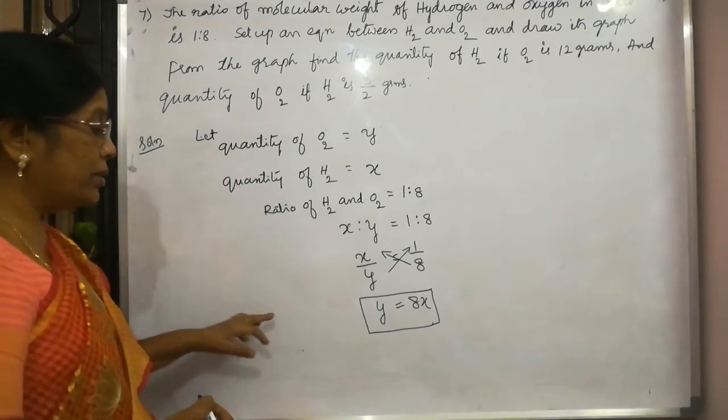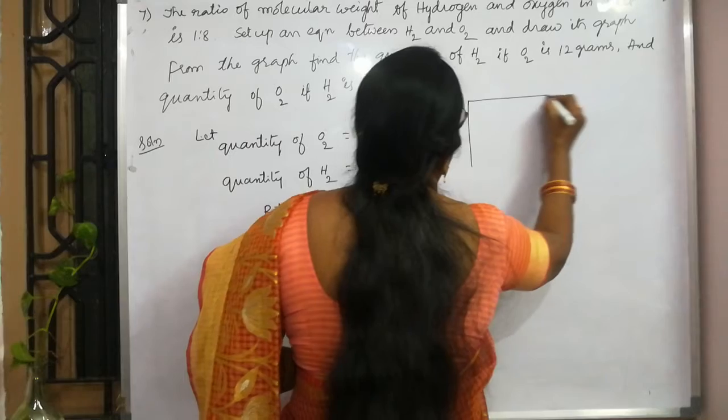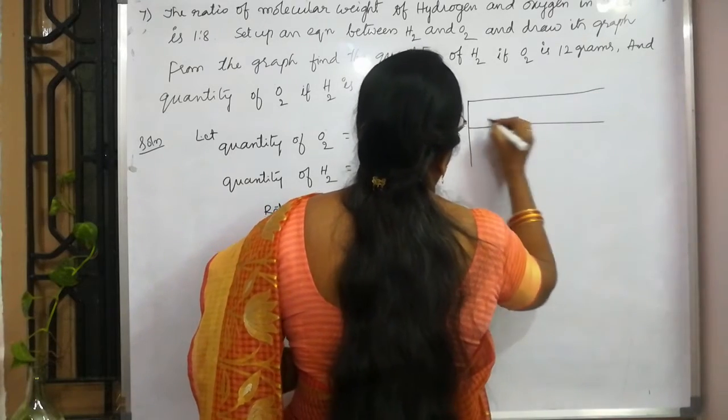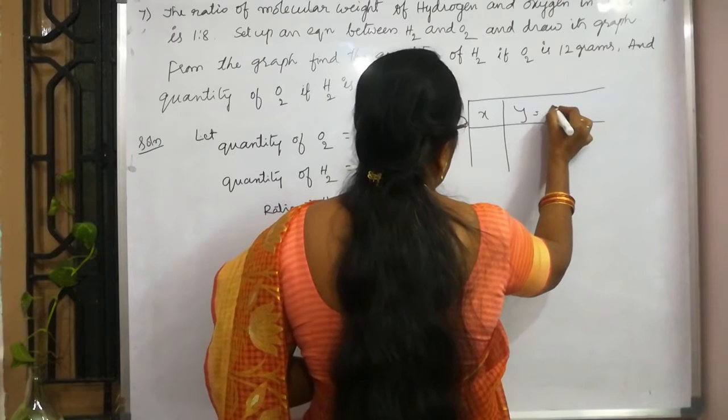Now, let us prepare the table for this. So, this is x and y is equal to 8x.